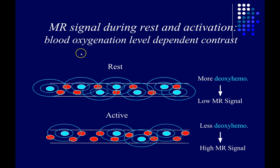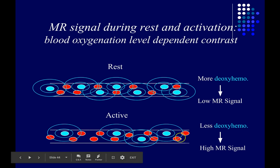Let me show this more graphically. Imagine this is a blood vessel — a capillary — in your brain, and these ovals are hemoglobin molecules. The red ones are oxygenated hemoglobin; the blue ones are deoxygenated hemoglobin without oxygen bound to it. The deoxygenated ones perturb the local magnetic field, causing protons to dephase faster and reducing the signal. When a part of the brain is active, there are relatively more oxygenated hemoglobin molecules in the blood vessel, meaning less deoxyhemoglobin, less dephasing, and a bigger signal from that part of the brain.